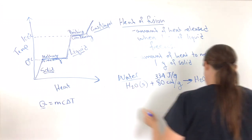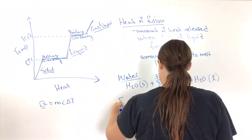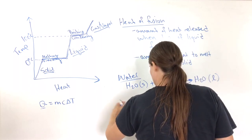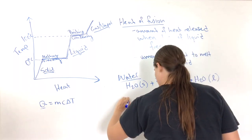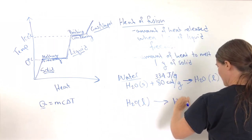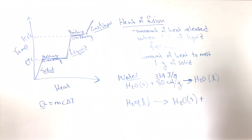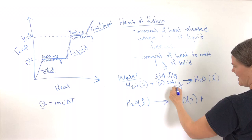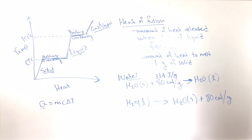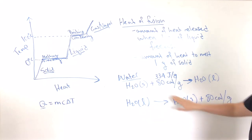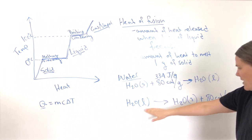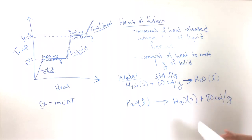So this is the heat of fusion. This is if you are going from a solid to a liquid — melting water. If you're going from a liquid to a solid, you've released 80 calories per gram of heat. When going from solid to liquid, you're gaining that heat. When going from liquid to solid, you're losing that heat.